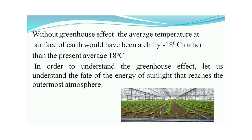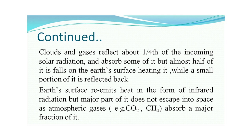Without the greenhouse effect, the average temperature at Earth's surface would have been minus 18 degrees centigrade, rather than the present average of plus 18 degrees centigrade. To understand the greenhouse effect, let us look at the fate of solar energy reaching Earth's atmosphere. Clouds and gases reflect about one-fourth of incoming solar radiation and absorb some of it, but almost half falls on Earth's surface, heating it, while a small portion is reflected back.